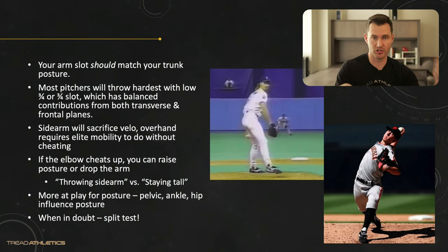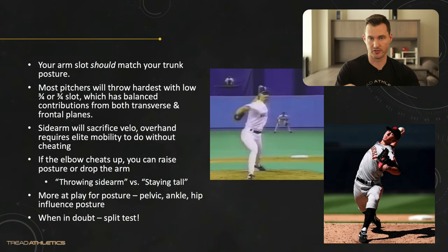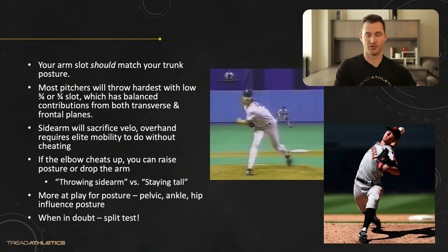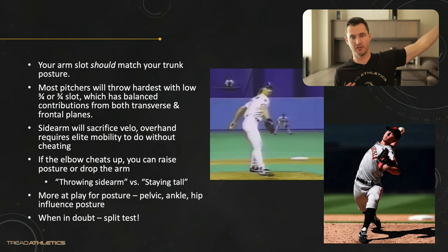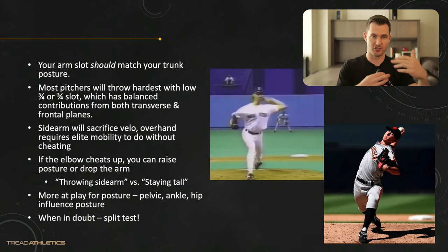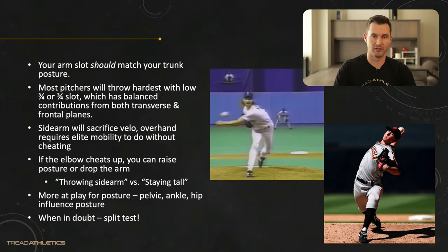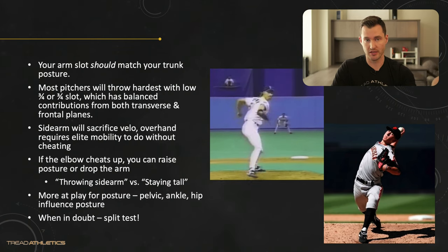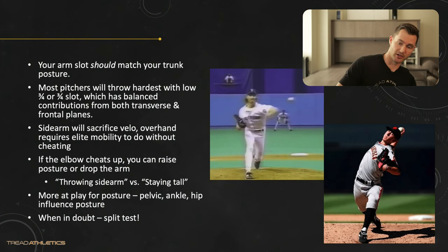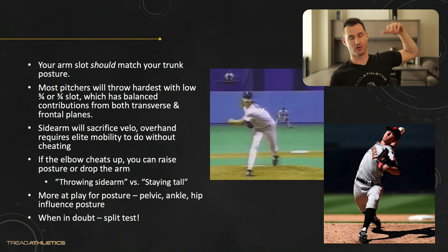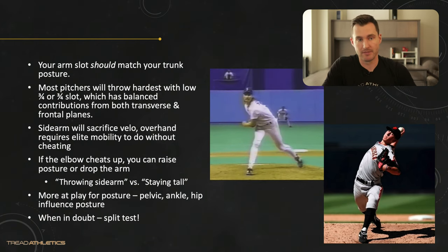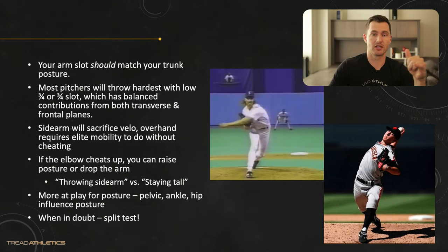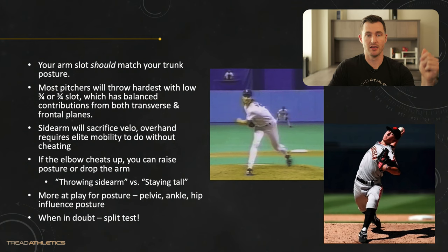Your arm slot should match your trunk posture — if it doesn't, that's where I'd first look. Most pitchers throw hardest with a low three-quarter to three-quarter slot — somewhere between trunk parallel and a three-quarter slot is where most pitchers slot in and get their best results. That's also where you get a balanced contribution from both the transverse and frontal planes. Getting to sidearm or submarine is purely transverse plane; straight over the top is more frontal plane and really hard to get into.